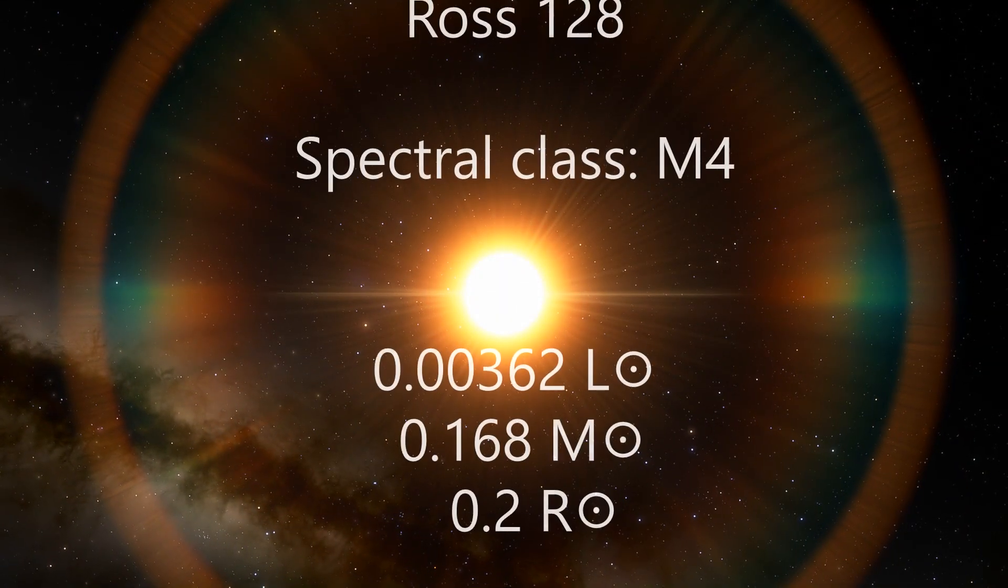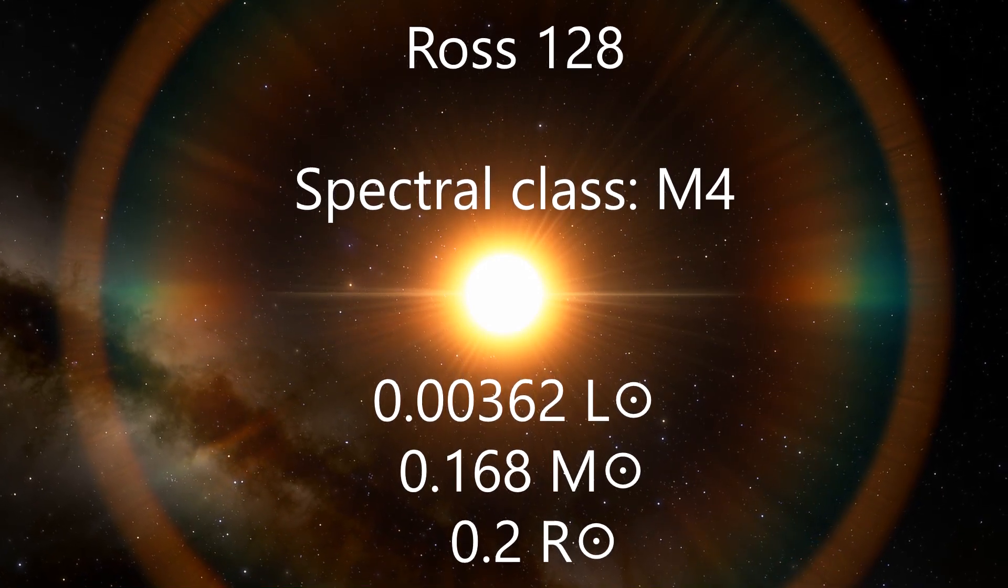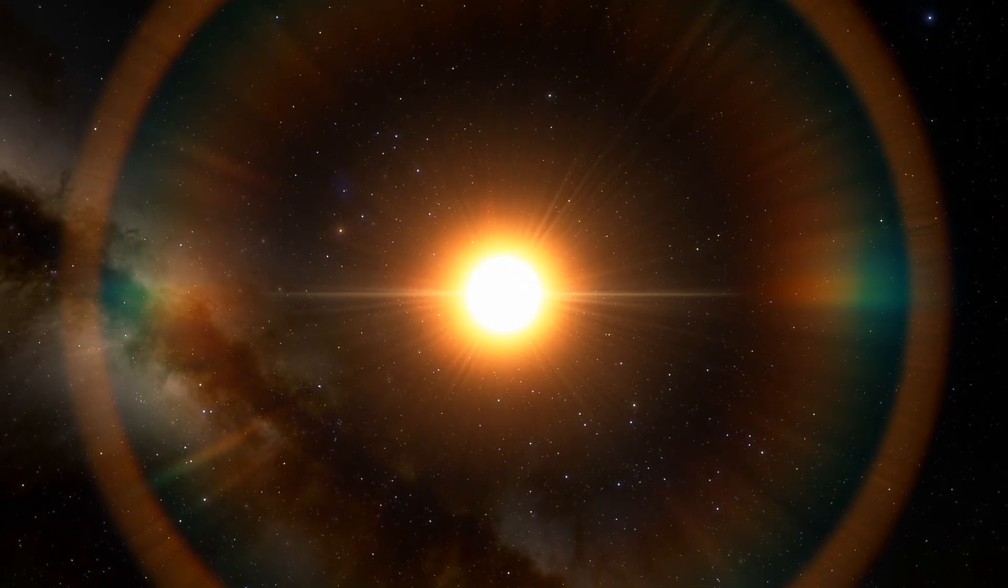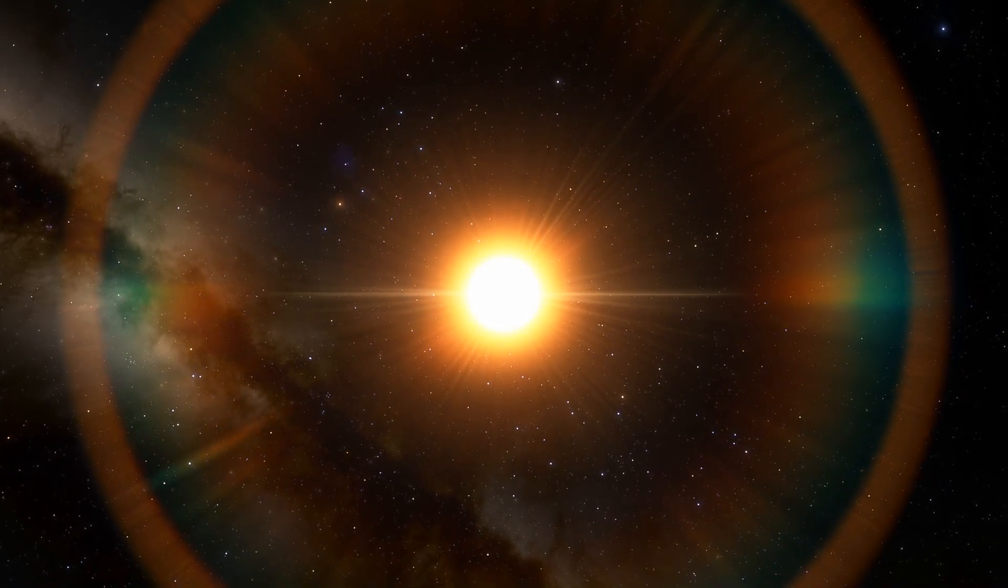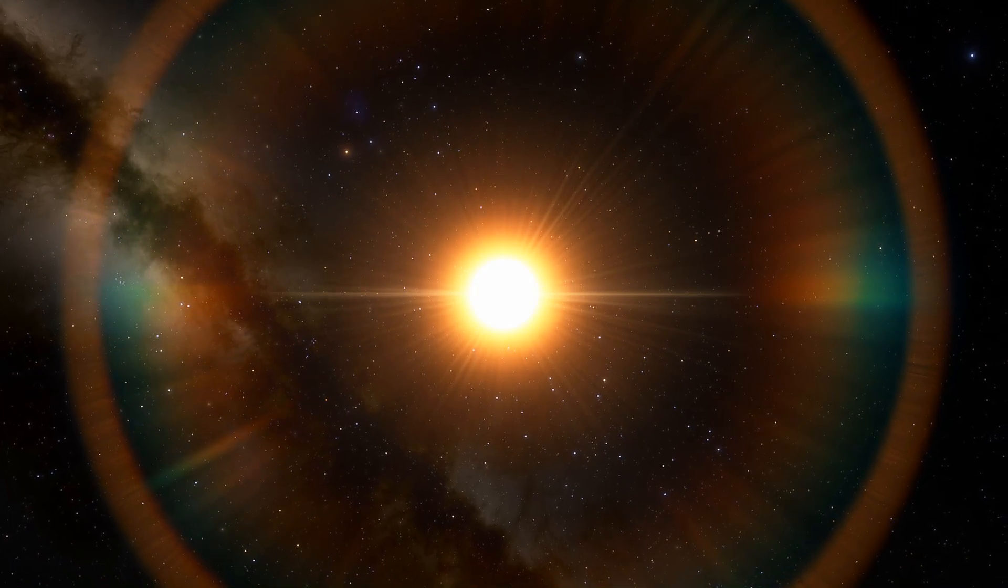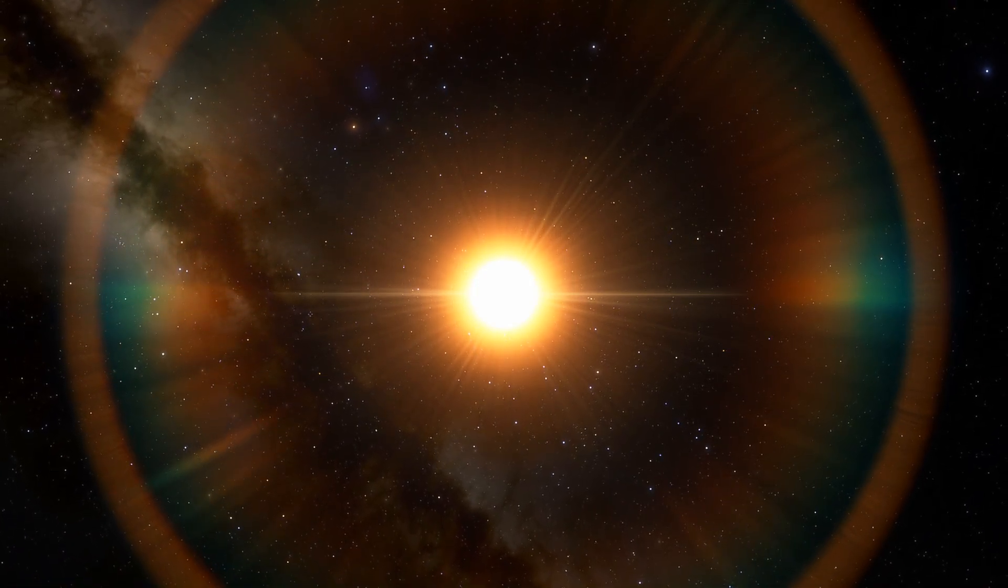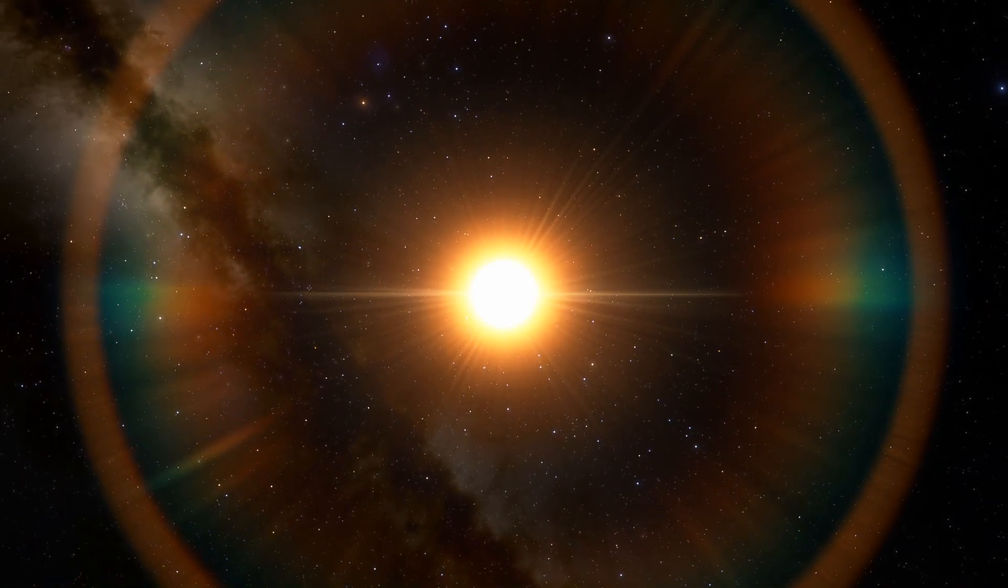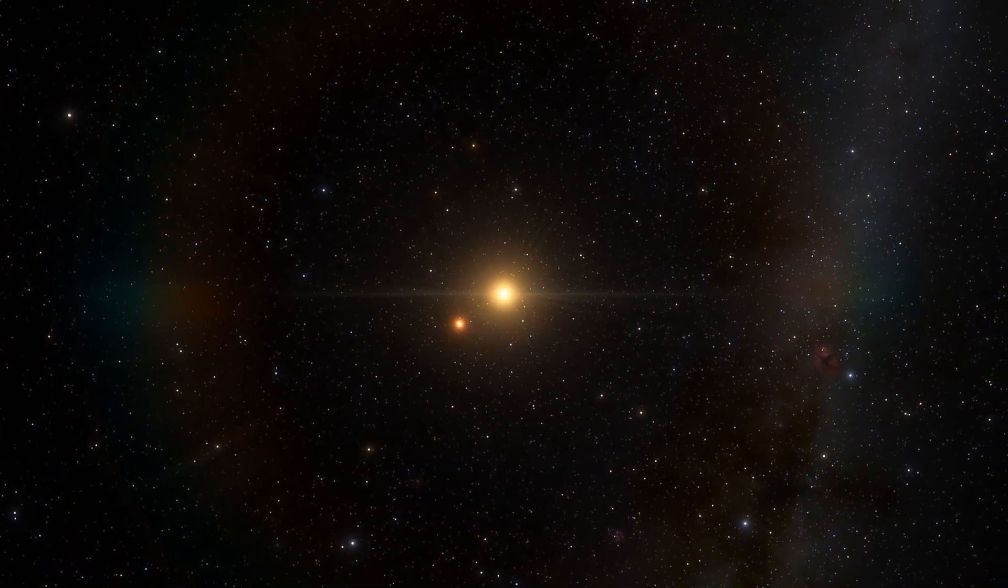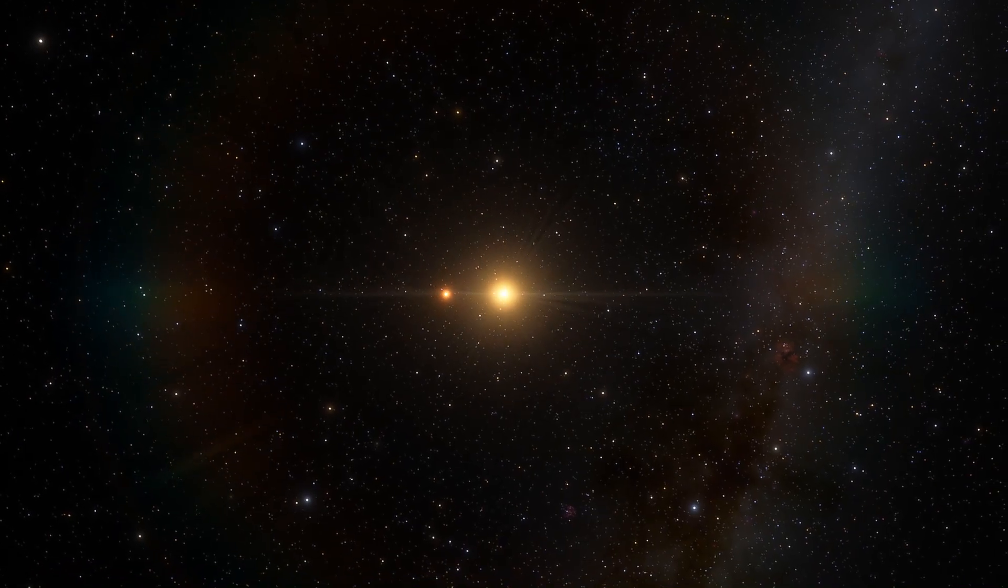Another small main-sequence star is Ross 128, a single red dwarf of spectral class M4 in the constellation Virgo, located at a distance of 11 light years from the Sun. Its mass is 0.168 solar masses, its radius is about one-fifth solar radii and its luminosity is only 0.00362 solar luminosities.